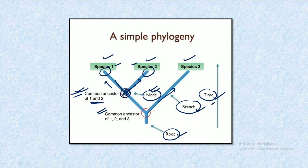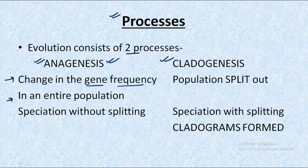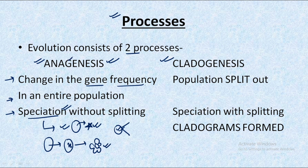Now let's understand the two main processes of evolution. The first is anagenesis and the second is cladogenesis. In anagenesis, there is a change in gene frequency across the entire population, and speciation occurs without splitting. The initial population changes into another type of population over time, leading to a different population being created, with no splitting of the existing population — hence the name anagenesis.